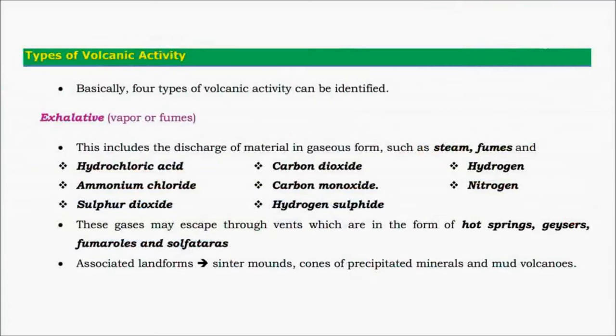Depending on the type of volcanic activity, volcanoes can be differentiated into exhalative type, where vapors, fumes, and gases form the major output. These contain important gases like hydrogen chloride, carbon dioxide, hydrogen, nitrogen, carbon monoxide, ammonium chloride, sulfur dioxide, and hydrogen sulfide. Sulfur dioxide is particularly significant as increased atmospheric concentrations give rise to acid rains and ocean acidification.